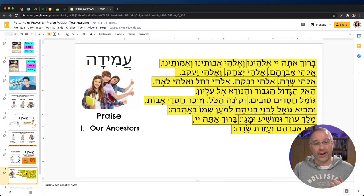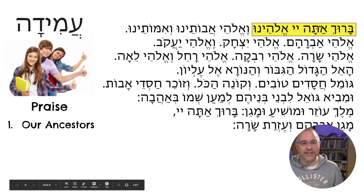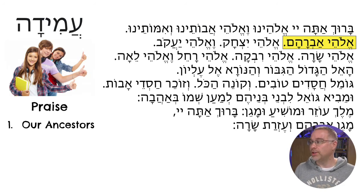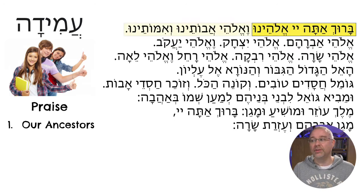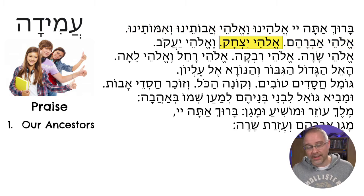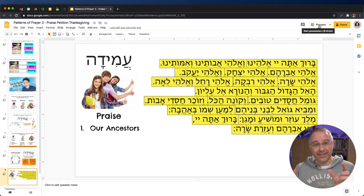Let me show you something else I found that I can do with Google Slides — this is really helpful, especially for when I'm teaching prayer. In present mode, as I click through this slide, you can see the different areas of the Hebrew get highlighted. I use this when I'm practicing the tefillah with my students. The way I did this was just to put the text on the slide and then create a number of yellow boxes over the text. I can split it up however I want, and then I animate those different boxes.